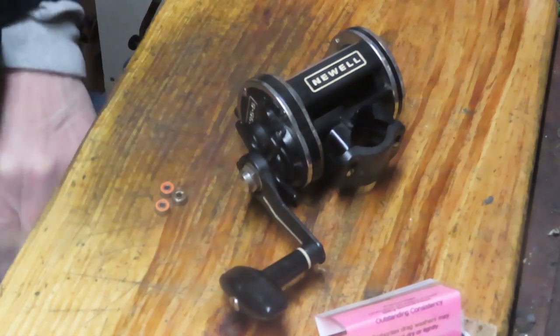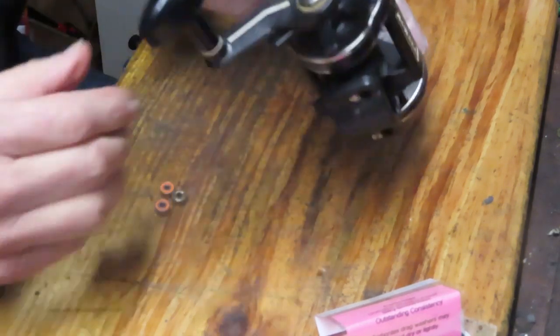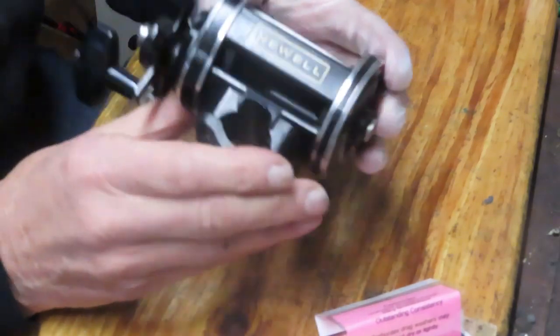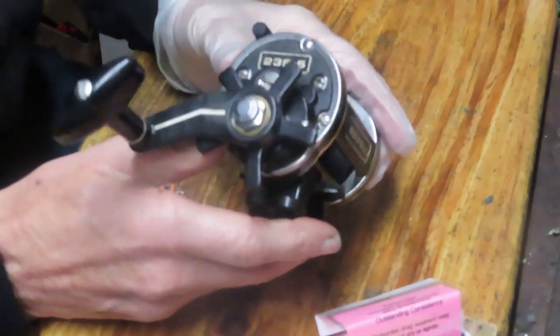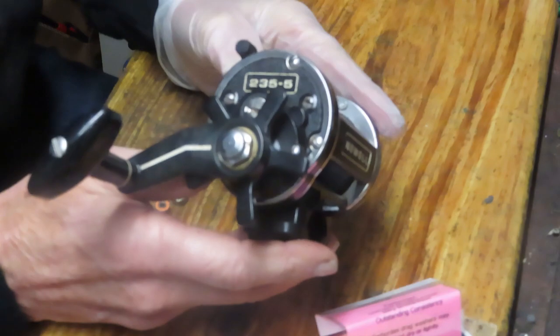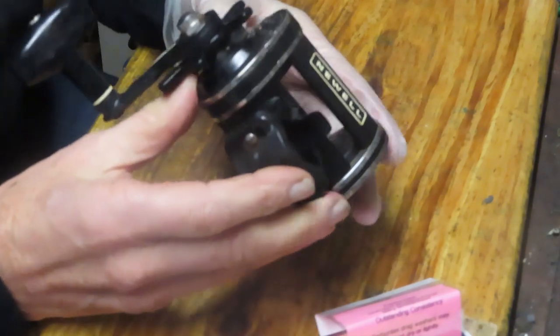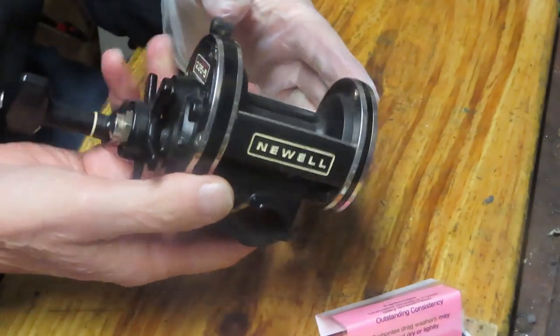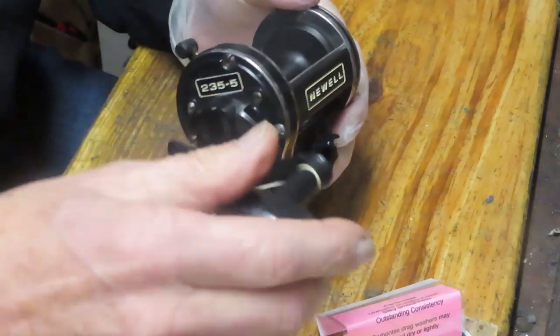Hi, this is Dennis with Second Chance Tackle. Today I have the pleasure of working on one of the all-time classics, the Newell 235-5 fishing reel. It is a reel that is treasured as a collectible and always a joy to fish.